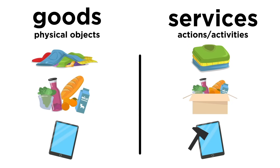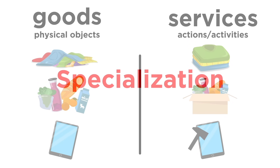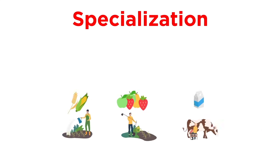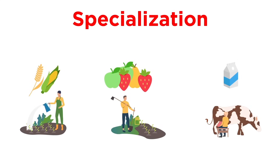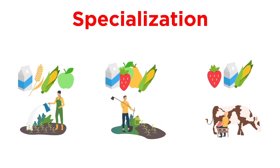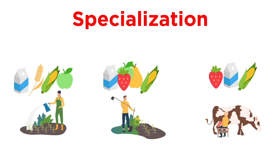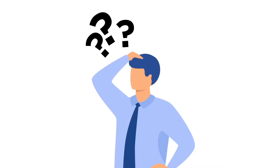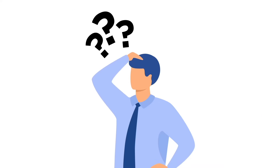Earlier in this series, we defined goods and services, and we also used the concept of specialization to rationalize that it is easier to purchase something that we need, rather than to learn how to produce it ourselves. But how do we know what the price should be for a good or service?